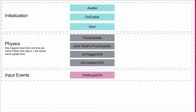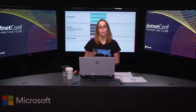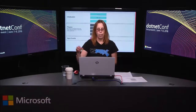The next section in the rendering order is input events, which I'll skip since I don't have a great example and it's fairly straightforward. Input events include OnMouseDown, OnMouseUp, and OnMouseDrag — events that happen with the GUI or for collider detection. Just think about typical mouse interactions.